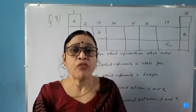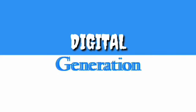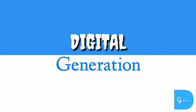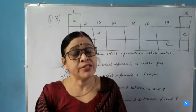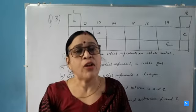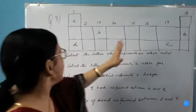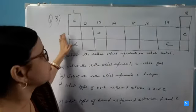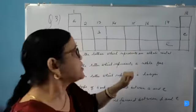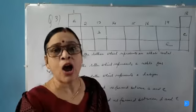Good morning students, welcome to my channel Digital Generation. Here is an important question from the periodic table in chemistry for Class 10. A periodic table is given and the letters are arranged according to the atomic number of the elements. These letters are not the chemical symbols of the elements.